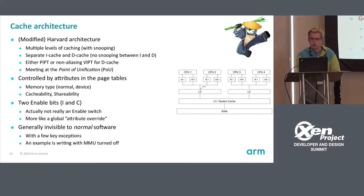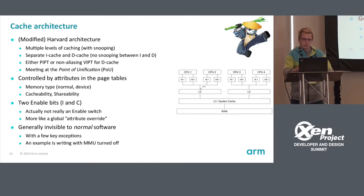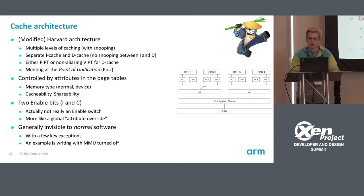The D-cache can be either PIPT (physically indexed, physically tagged) or non-aliasing VIPT. All caches are meeting at the point of unification, which is where the instruction cache and D-cache meet together — that's L2. There is also a point of coherency where all CPUs share the same cache.